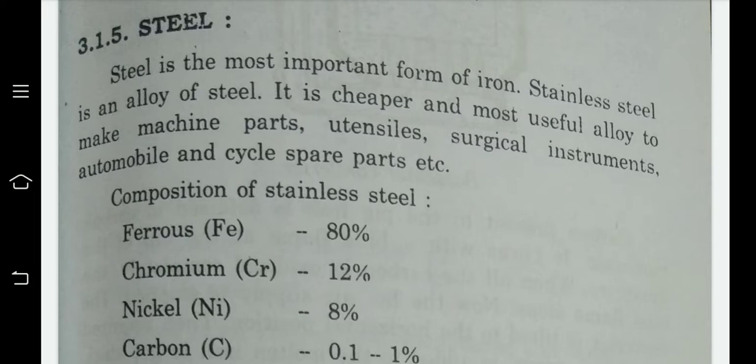The composition of stainless steel is: iron (Fe) 80%, chromium (Cr) 12%, nickel (Ni) 8%, and carbon (C) 0.1 to 1 percent.